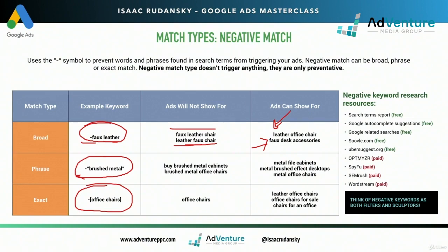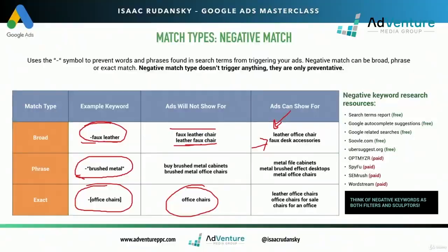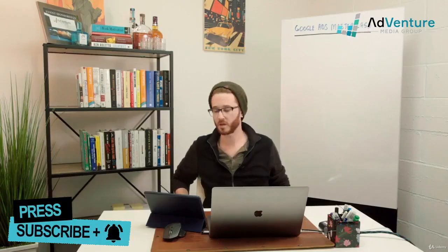So if my negative exact match keyword is negative brackets office chairs, my ads will not show for the search office chairs. But my ads could still show for leather office chairs, office chairs for sale, or chairs for an office — the only blocked term is the exact phrase office chairs. For example, if I sell office chairs and see the word free showing up in search terms, I don't want to pay for clicks from people looking for free office chairs. The right match type for free would be broad match — negative free — which tells Google that whenever free shows up in any search query, don't trigger any of these keywords.